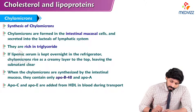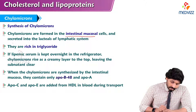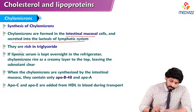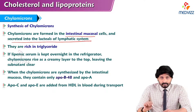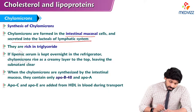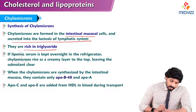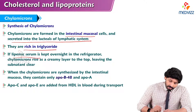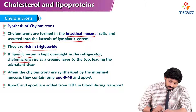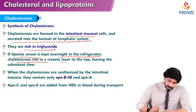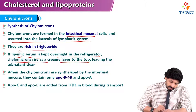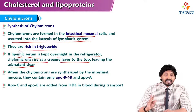Chylomicrons are formed in intestinal mucosal cells and secreted into the lacteals of the lymphatic system. They are rich in triglycerides. If lipemic serum is kept overnight in the refrigerator, chylomicrons rise as a creamy layer to the top, leaving the subnatant clear.